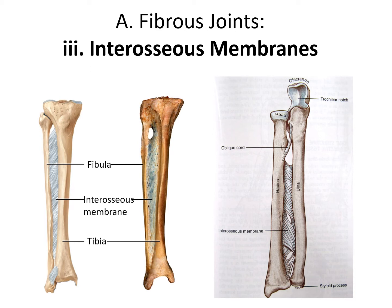We have a similar sheet that holds the radius and ulna together, and here there is movement because when you pronate and supinate your hand, the radius is crossing over the ulna. In this case the membrane also serves to separate the muscles of the arm into different compartments.